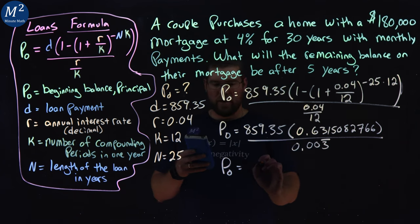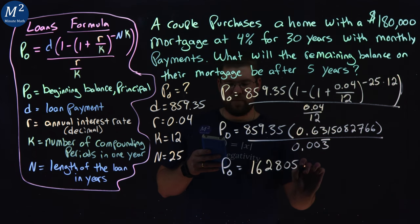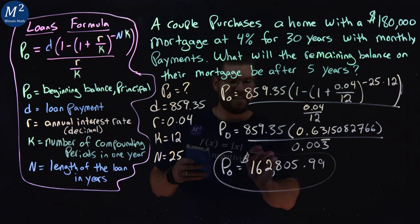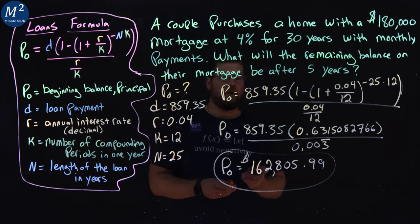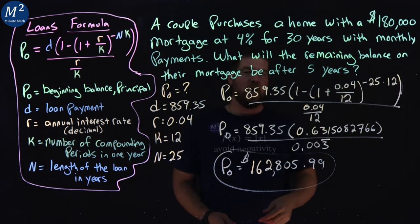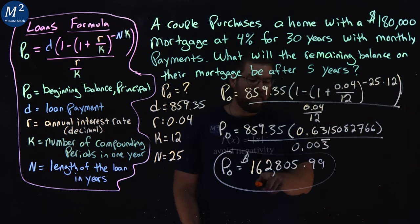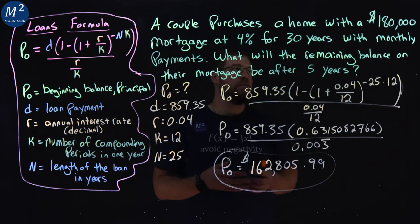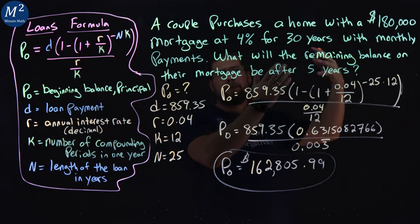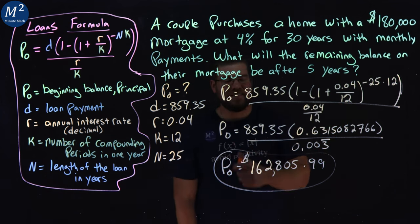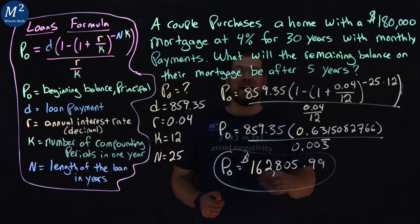That number I got was 542.6866 divided by 0.003 repeating forever. Put a bunch of those down, and we get a P sub 0 of 162,805.99. And so this value, let's see if it actually makes sense in the context of the problem. If our initial mortgage was $180,000, after five years, we have a remaining balance of $162,805.99 rounded. And that makes sense. Over time, that balance amount should decrease.